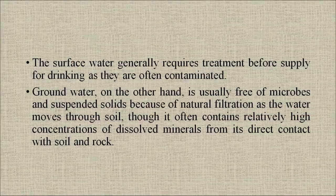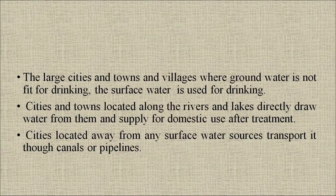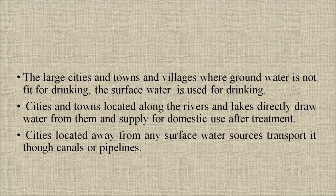Surface water generally requires treatment before supply for drinking as it is often contaminated. Groundwater, on the other hand, is usually free of microbes and suspended solids because of natural filtration as the water moves through soil, though it often contains relatively high concentrations of dissolved minerals from direct contact with soil and rock. In large cities and towns where groundwater is not fit for drinking, surface water is used. Cities located along rivers and lakes draw water directly from them and supply for domestic use after treatment. Large cities like Delhi draw water from multiple sources like Bhakra reservoir, Upper Ganga canal, Western Yamuna canal and the Yamuna river.